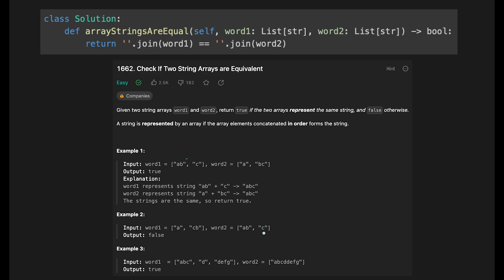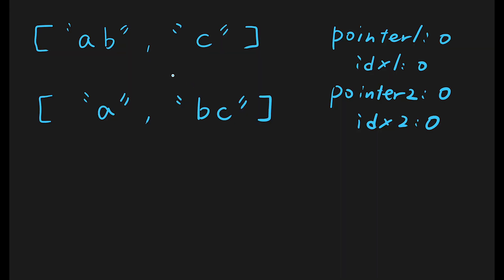One pointer is for the index of words in the input array, and the other is for characters of each word. We iterate from the beginning, and every time we check if we reach the end of a word, we update both indices for the next word. Pointer one and index one are for the first input array; pointer two and index two are for the second. Initially both are pointing at index zero, the first character — which is 'a' — and we compare those characters. They are the same.